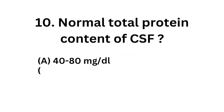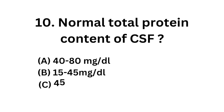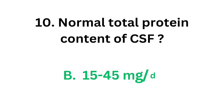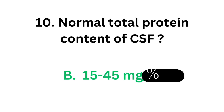Question number ten: normal total protein content of cerebrospinal fluid — option A: 40 to 80 mg per deciliter, option B: 15 to 45 mg per deciliter, option C: 45 to 90 mg per deciliter, option D: 100 mg per deciliter. The correct answer is option B, 15 to 45 mg per deciliter. Normal total protein content of CSF is 15 to 45 mg per deciliter.